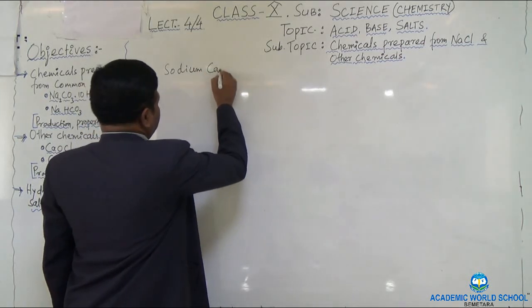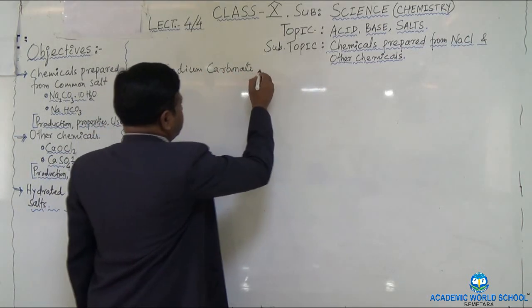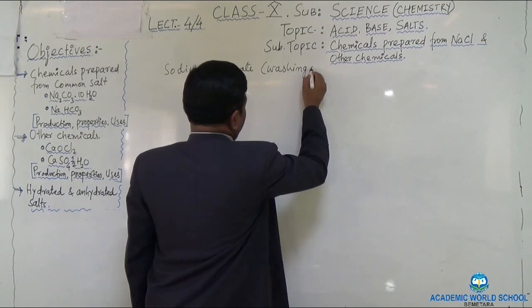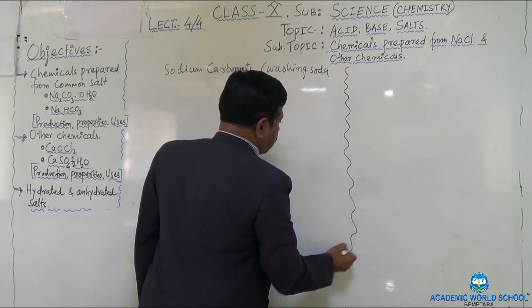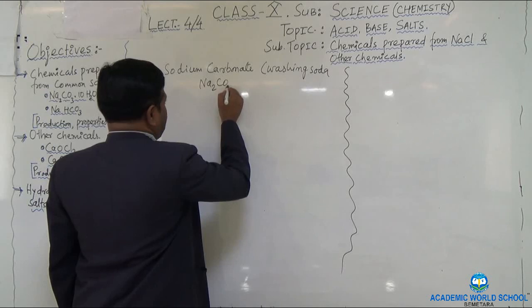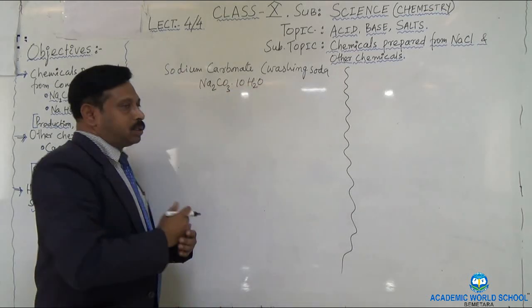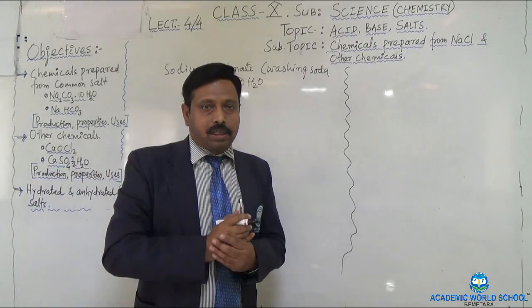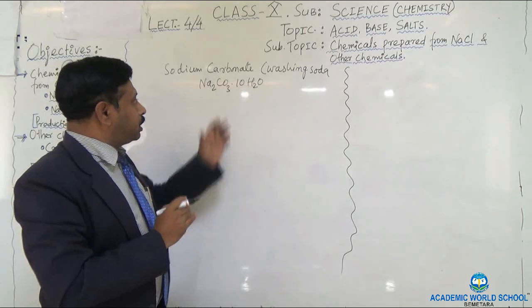Write with me: sodium carbonate. The common name is washing soda. The chemical formula is Na₂CO₃·10H₂O — sodium carbonate with 10 molecules of water. This is called water of crystallization, or crystallization of water molecules.